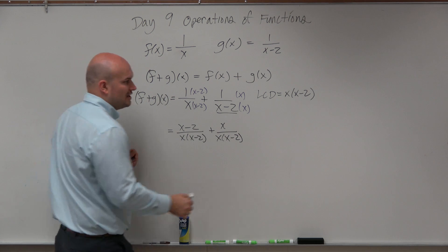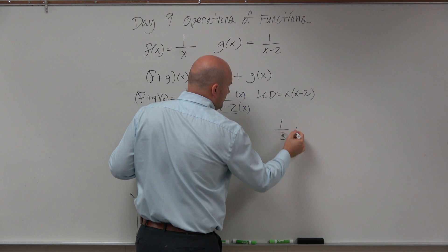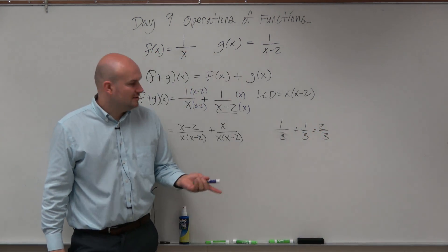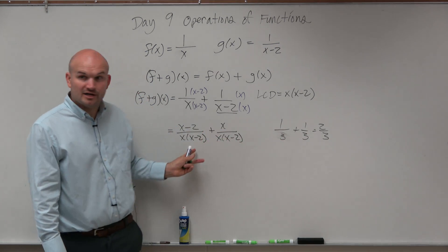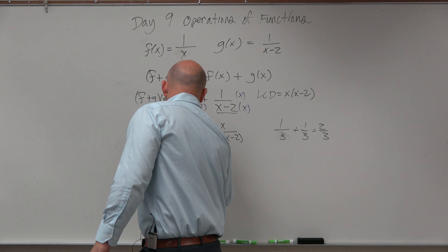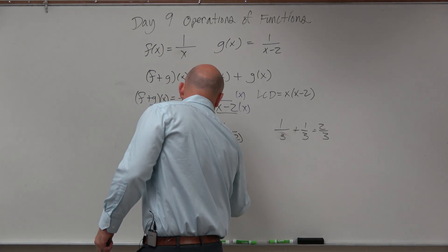Well guys, back in your arithmetic days, 1/3 plus 1/3 equals 2/3. So as long as you have the same denominator, you now can just combine the numerators. x plus x is 2x minus 2, all over x times x minus 2.